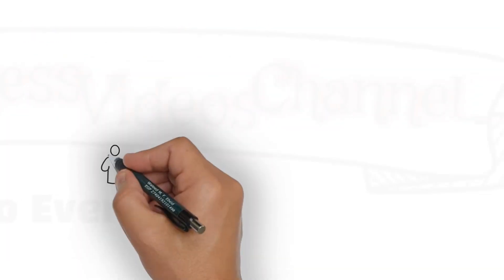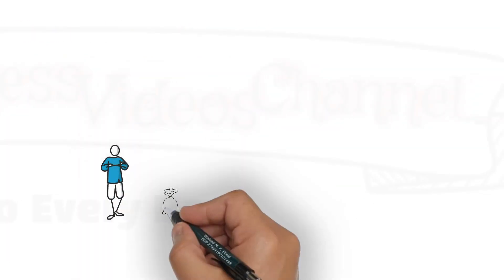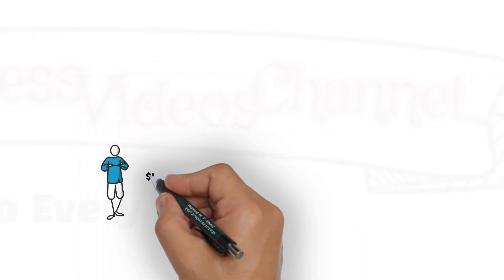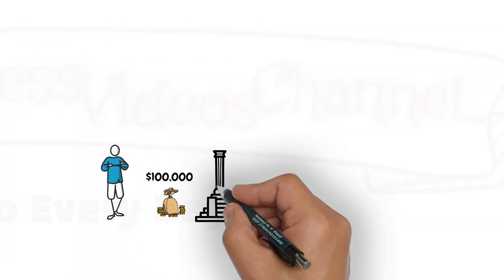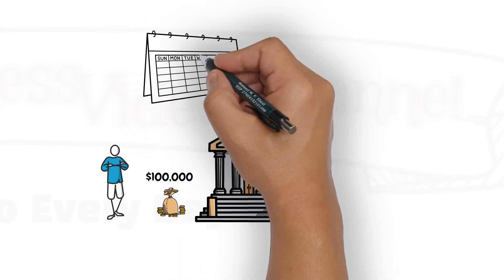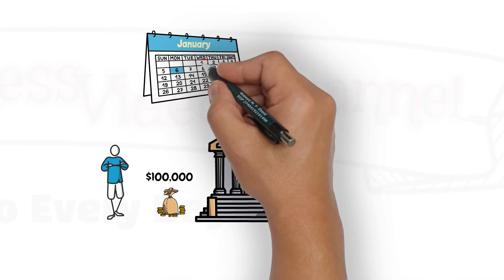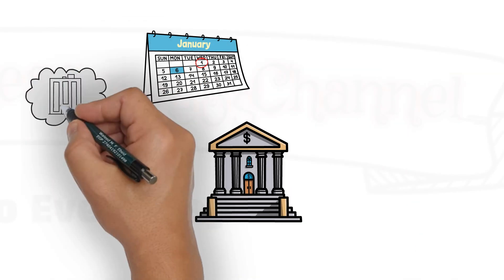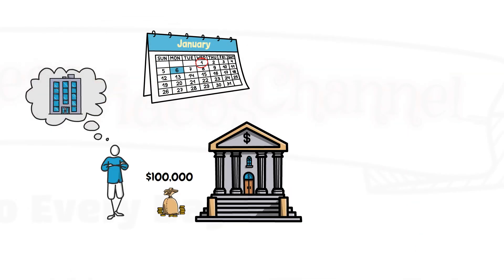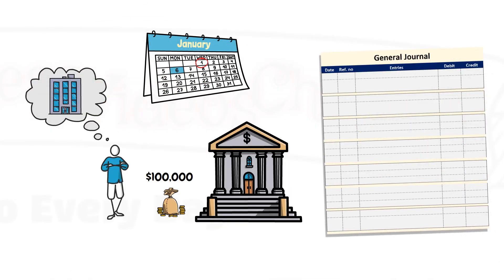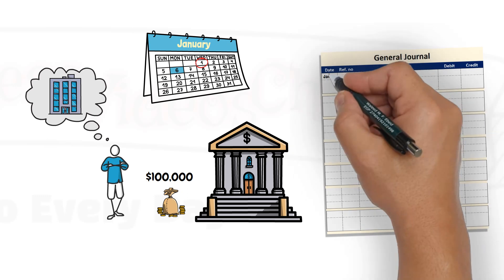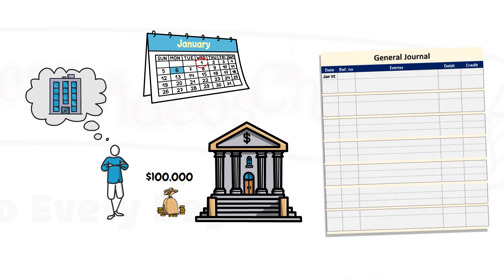Let us journalize our previous example where Mr. Stick deposited 100,000 in a bank account on January 1 to start his business. Insert the date of the transaction here.